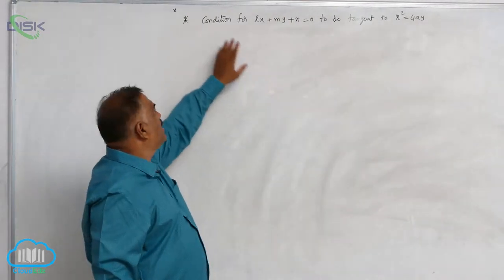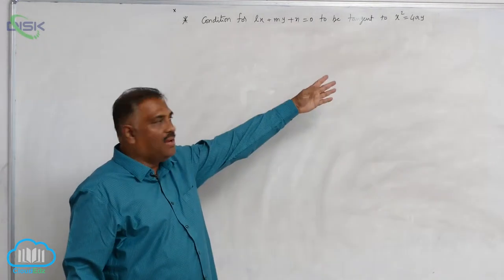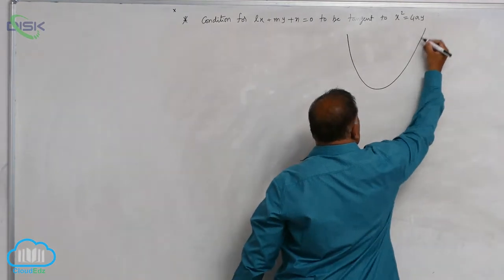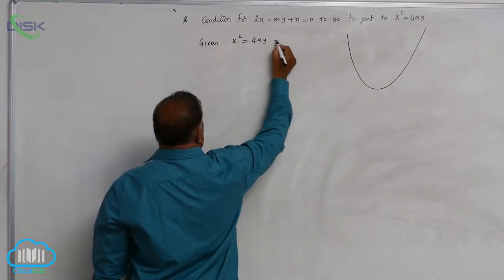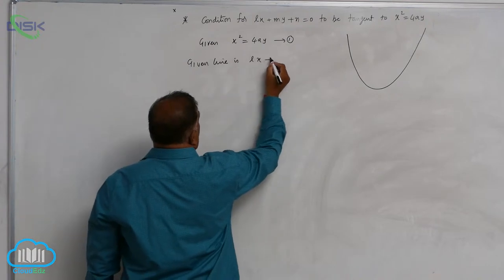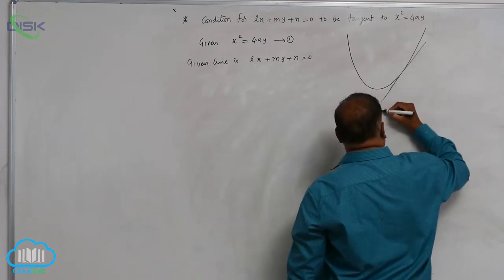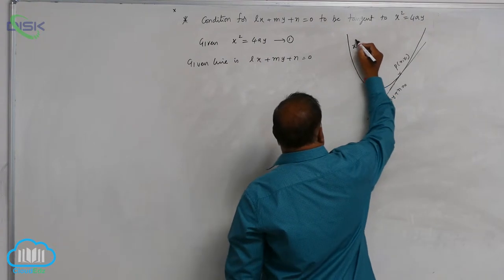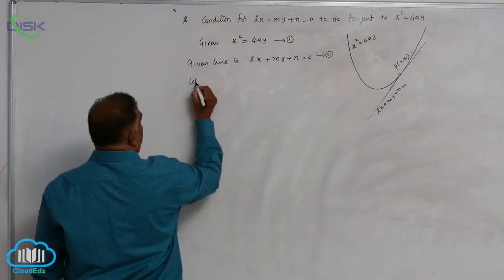Let us discuss one more important result: the condition for lx + my + n = 0 to be a tangent to the parabola x² = 4ay. This is an upward parabola. The given parabola is x² = 4ay — call it equation 1 — and the given line is lx + my + n = 0. This line touches the parabola at point P(x1, y1).